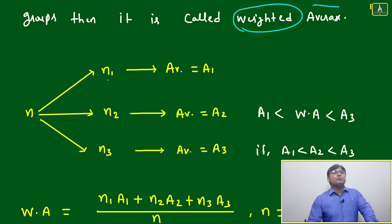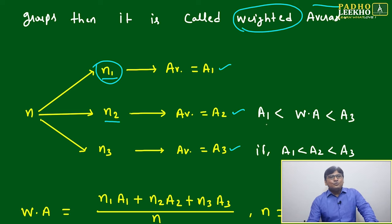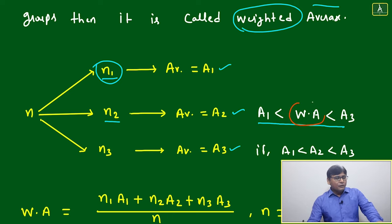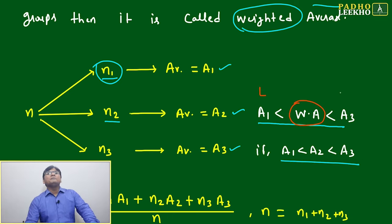If n splits into three parts n1, n2, n3, and the average of group n1 is A1, similarly A2 and A3, then for understanding purposes we'll take in sequence A1 < A2 < A3. The weighted average will always come between the lowest and highest. Lowest is A1, highest is A3.